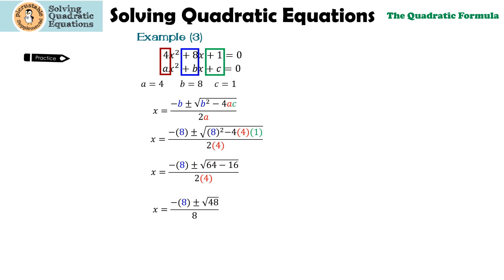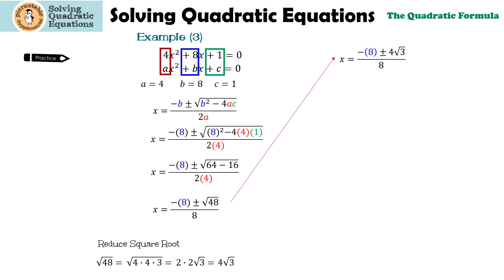64 minus 16 is 48, and 2 times 4 is 8. We need to ask ourselves: is there a perfect square in 48? Yes — there are actually two 4's in 48. The square root of 4 is 2, the square root of 4 is 2, and then we have the square root of 3, giving us 4 times the square root of 3. So instead of writing the square root of 48, we write 4 root 3. Looking at negative 8, the 4, and the 8, I can factor a 4 from the top: 4 times negative 2 plus or minus root 3, all over 8. The 4 and 8 cancel, giving us the exact answer of negative 2 plus or minus the square root of 3, over 2.